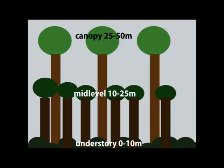However, if the higher levels are thinned out, light can then reach the understory and the ground becomes taken over, forming the middle of the forest. It is then called a jungle.